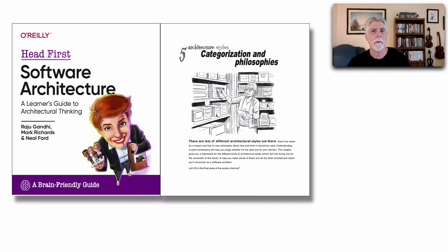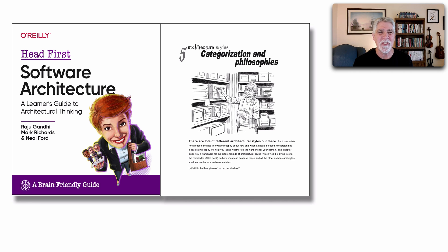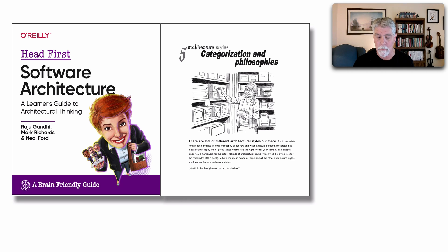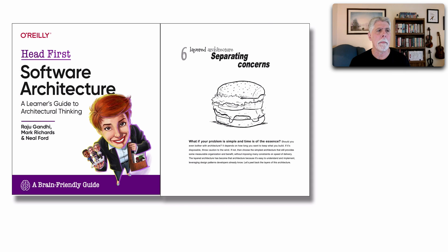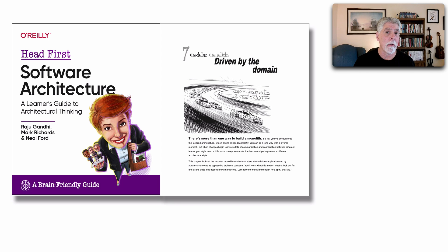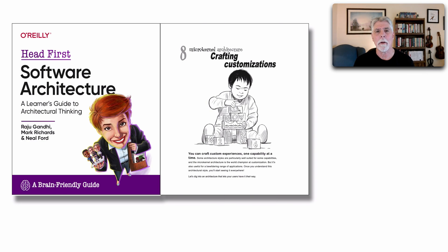In chapter five, we talk about architectural styles and go through a classification — something we didn't do a lot of in Fundamentals of Software Architecture. We talk about technical versus domain partitioning, monoliths versus distributed architecture, and the core differences between these categories and philosophies. The rest of the book is dedicated to five different architectural styles. The next three chapters focus on monolithic styles: a chapter for layered architecture, a chapter for modular monoliths, and a chapter for microkernel architecture — all shown through fun metaphors and graphics.